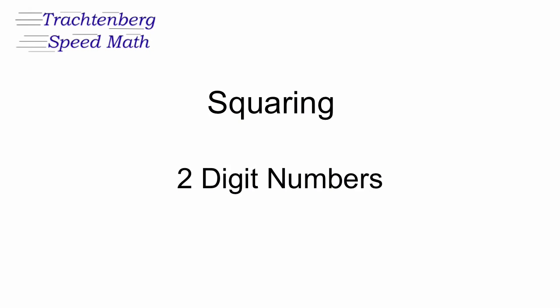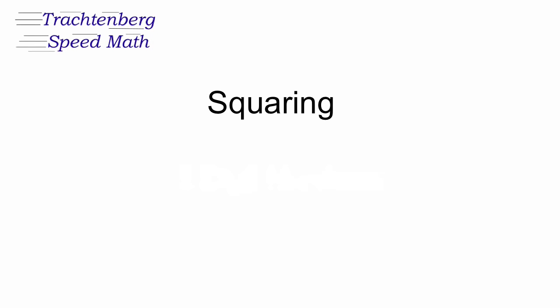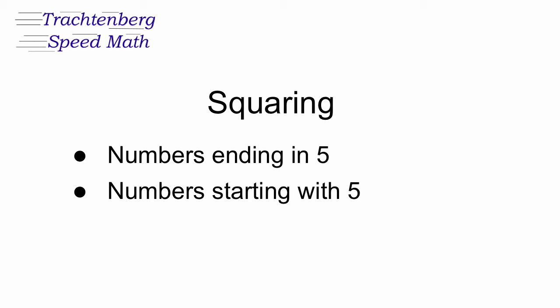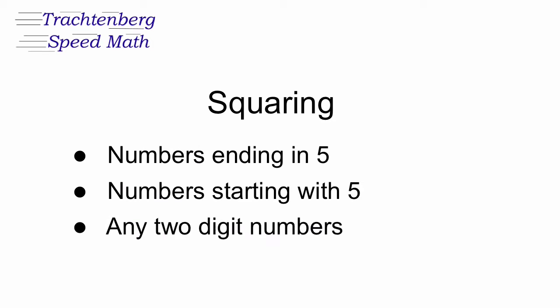Hi, Tony here from Trachtenberg Speedmath. Today we're going to have a look at squaring two-digit numbers. Squaring two-digit numbers is very easy once you know the steps involved. When squaring, we have two special cases and the general case. The first special case are numbers ending in five. The second special case are numbers starting with five, and then we have the general case for any two-digit numbers.